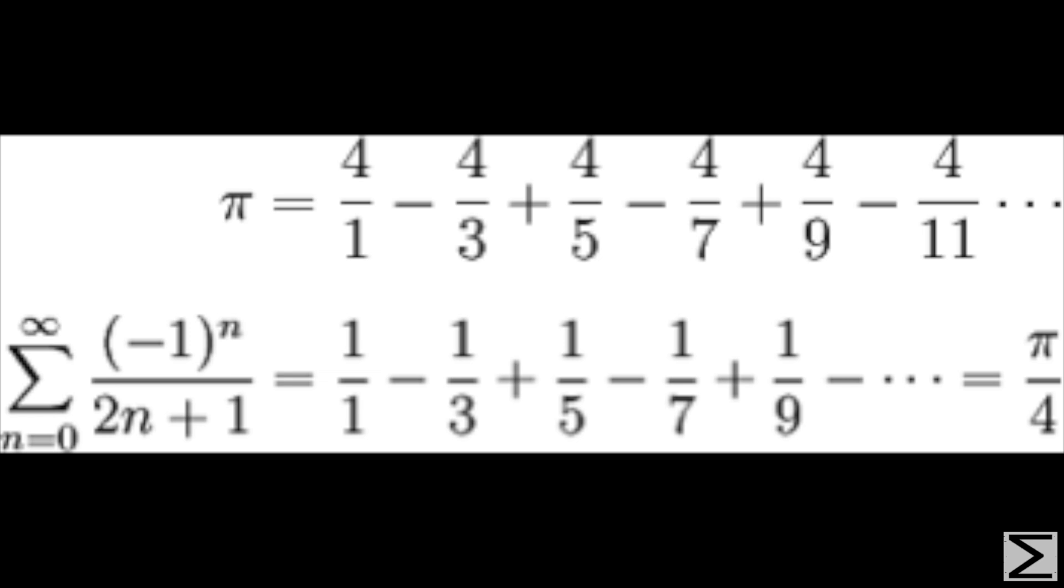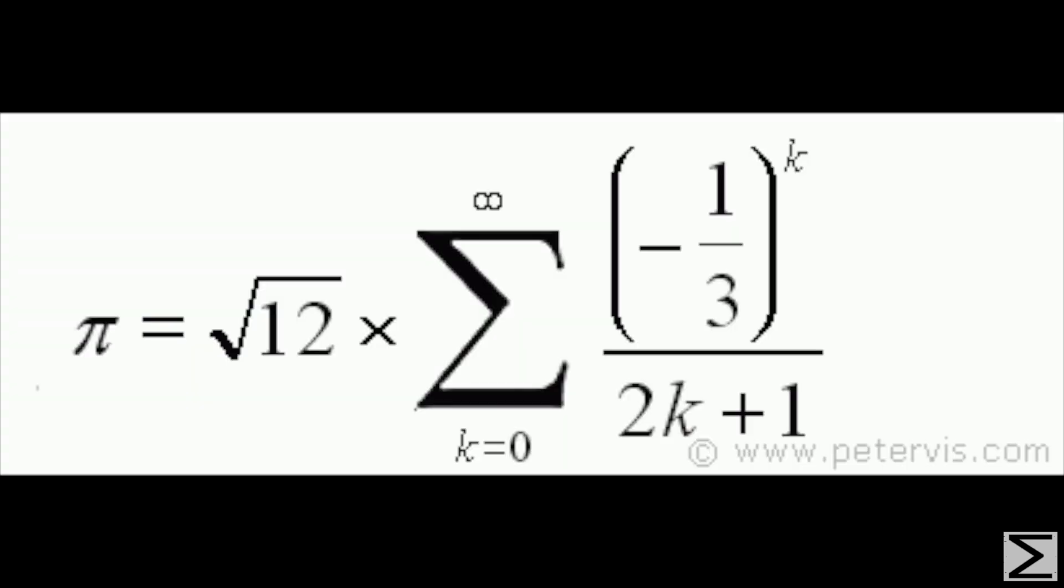In addition to this formula, he also gave the more rapidly converging series of pi, which was equal to the square root of 12 times 1 minus 1 over 3 times 3 plus 1 over 5 times 3 squared minus 1 over 7 times 3 cubed, and so on and so forth.